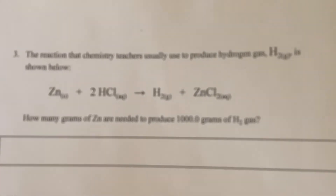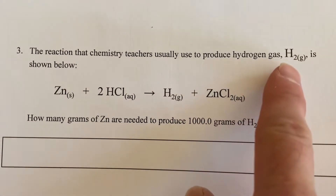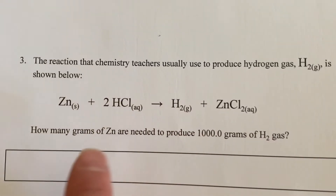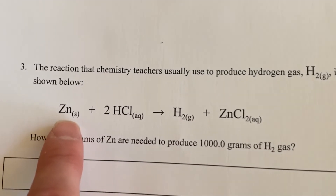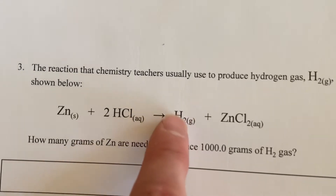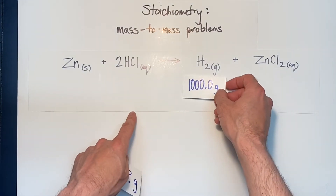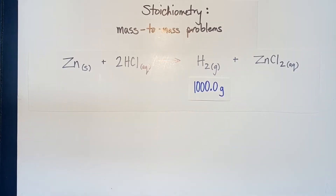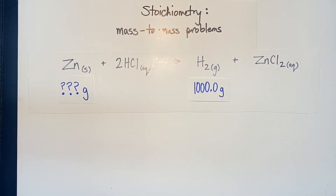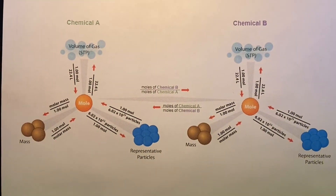Problem number three in this week's assignment reads: the reaction that chemistry teachers usually use to produce hydrogen gas — H₂, a diatomic element — is shown below. The question asks how many grams of solid zinc, which is a reactant, are needed to produce 1000.0 grams of hydrogen gas, the product. So we want to produce 1000.0 grams of H₂ — how many grams of zinc do we need?